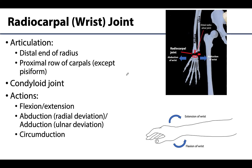The wrist joint is a synovial condyloid joint, sometimes referred to as an ellipsoid joint. This means it is capable of more movements than a hinge joint, but not as much as a ball and socket joint — so no rotation occurs in a condyloid joint.